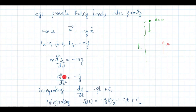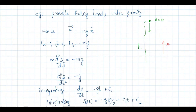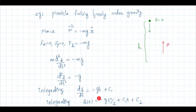Solving this differential equation: one integration gives dz/dt = −gt + C₁. Integrating once more gives z(t) = −½gt² + C₁t + C₂. There are two integration constants C₁ and C₂, which is expected since we have a second order differential equation. Whenever you have a second order differential equation, the final solution will contain two integration constants.